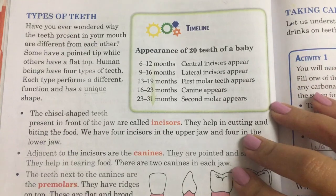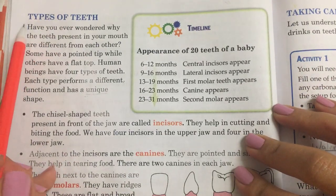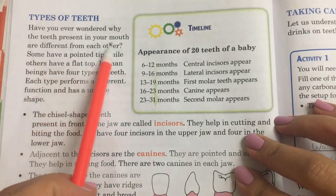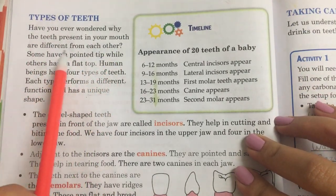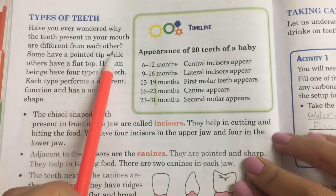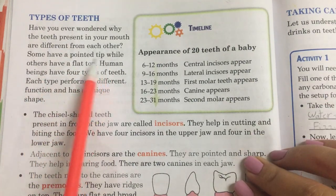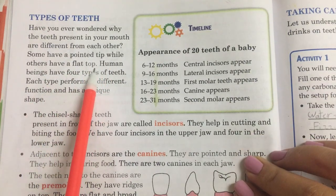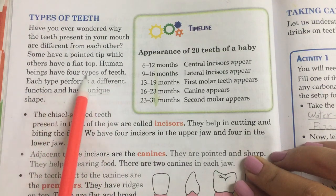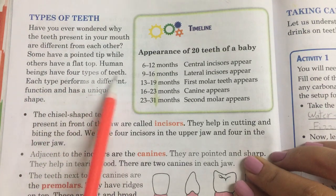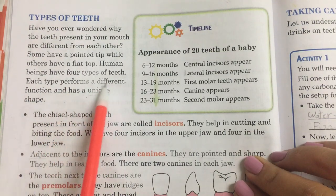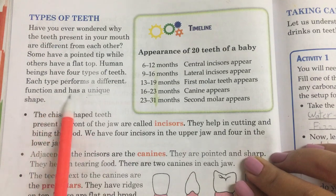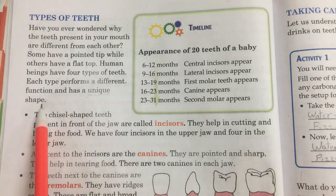Now, types of teeth. Have you ever wondered why the teeth present in your mouth are different from each other? Some have a pointed tip while others have a flat top. Human beings have four types of teeth. Each type performs a different function and has a unique shape.